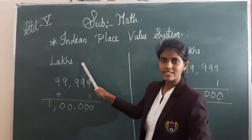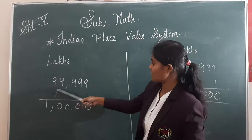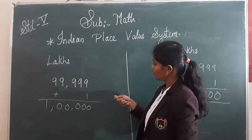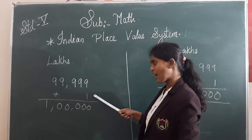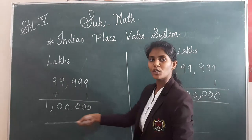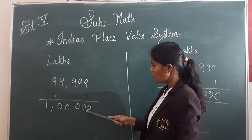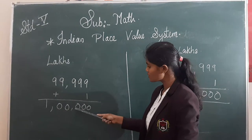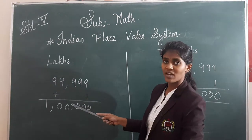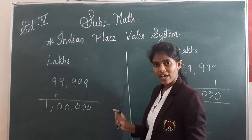What we have next is lakhs. Here you can see I have written the largest five-digit number. When I add one to it, what do I get? One lakh. Now, how many zeros are there in one lakh? One, two, three, four, and five — five zeros.